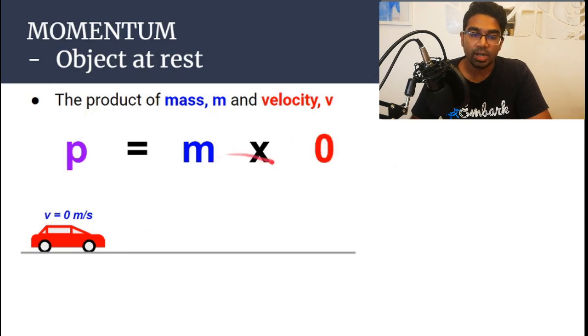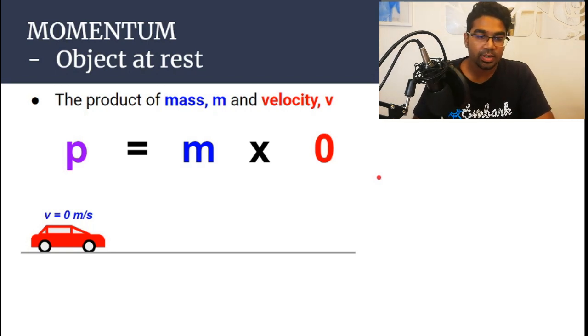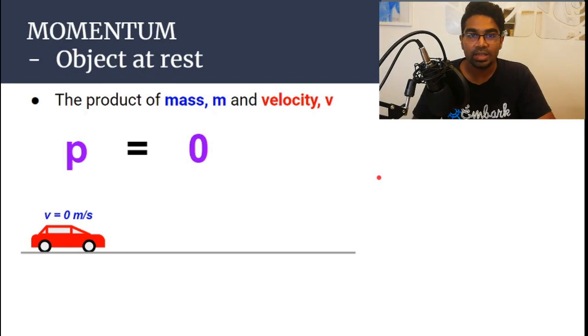And anything multiplied by zero is zero, of course. And so, the momentum is zero. The momentum of an object that is not moving is zero.